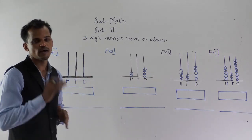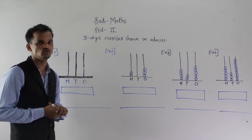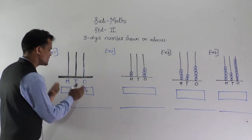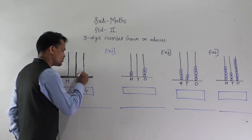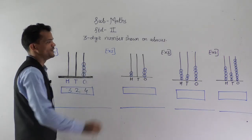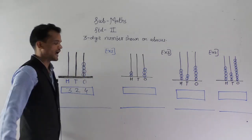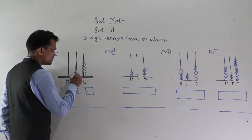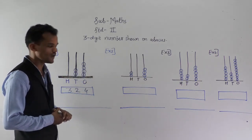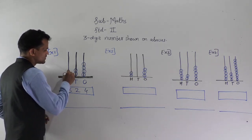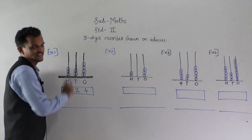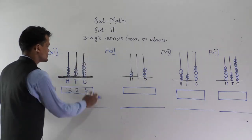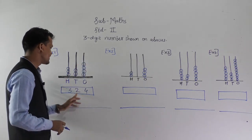Now I am showing how to show a three digit number on the abacus. I want to show three hundred and twenty four. In the ones place spike I will put four beads — it shows four ones. In the tens place spike I will put two beads — it shows two tens. At the hundreds place spike I will put three beads — it shows three hundreds. So this abacus shows the number three hundred and twenty four.